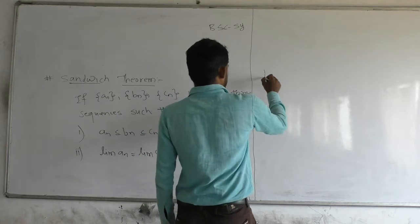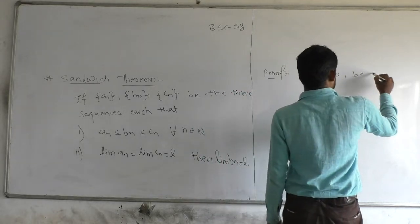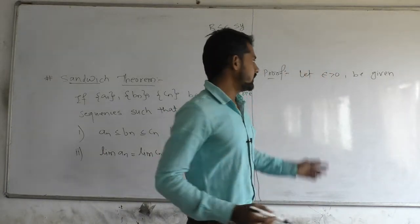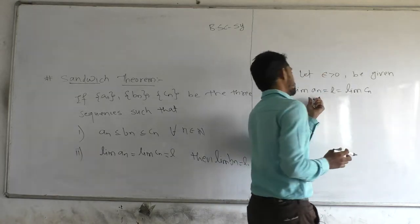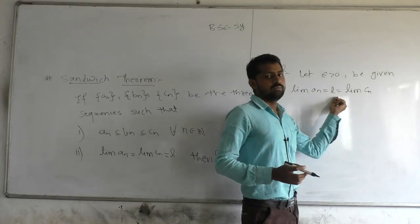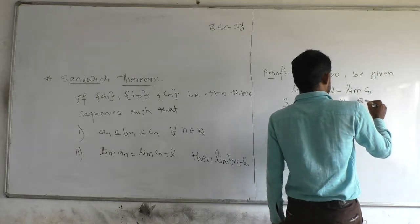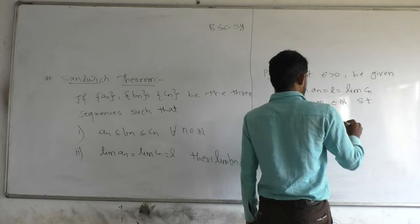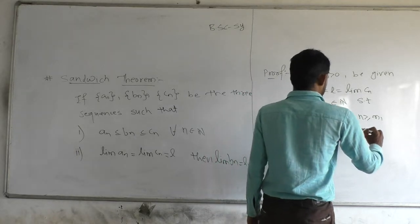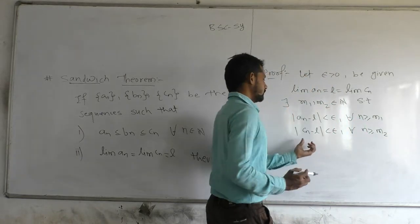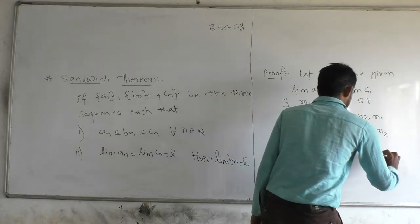Now we prove the theorem. Let epsilon greater than 0 be given, where epsilon is a small positive real number. Since the limit of A_N equals L and the limit of C_N equals L — that is, both sequences A_N and C_N converge to the limit point L — there exist M1, M2 belonging to the set of natural numbers such that |A_N − L| < epsilon for all N greater than or equal to M1.